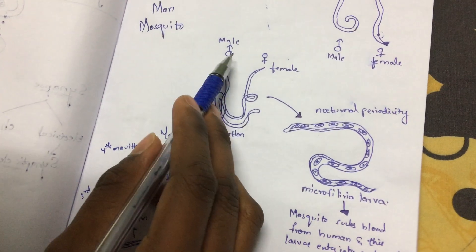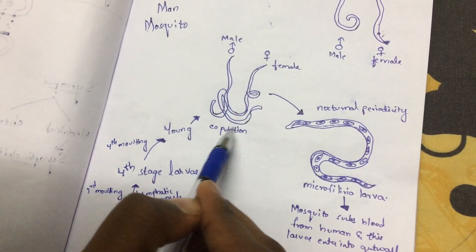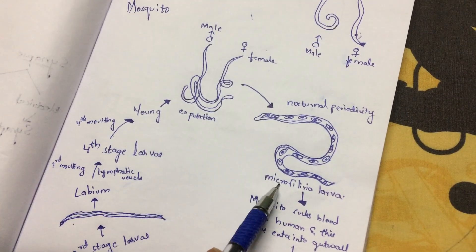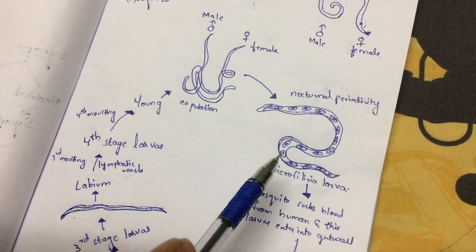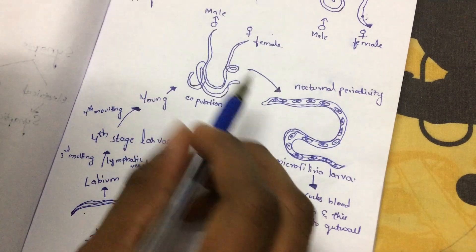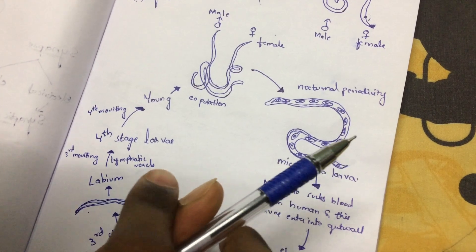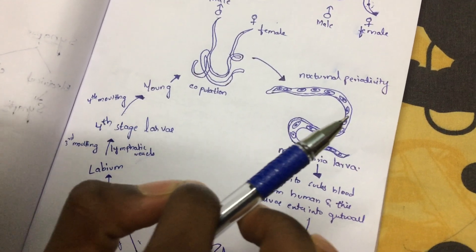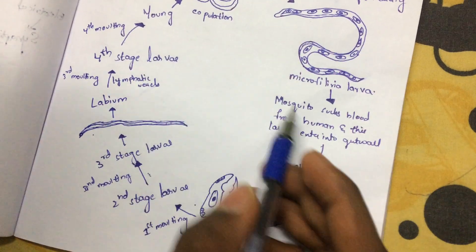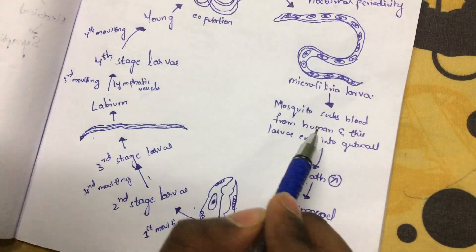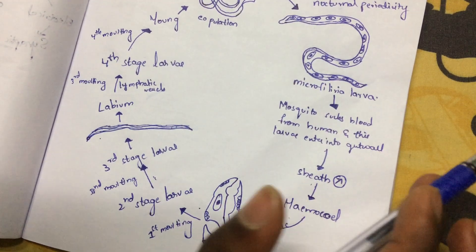First, in man. In man, there will be two adult worms — male and female. These both mainly undergo copulation and mainly lead to the formation of Microfilaria larva. The length of the Microfilaria larva is 0.2 to 0.3 mm. At daytime, this Microfilaria larva will enter into the blood vessels, and from the blood vessels it will enter into the lymphatic vessels, and from the lymphatic vessels it enters into the lymph. Finally, it destroys the lymph. As we know, lymph is one of the parts of the blood. The Microfilaria larva will be present in the lymphatic vessels, destroying the lymph.